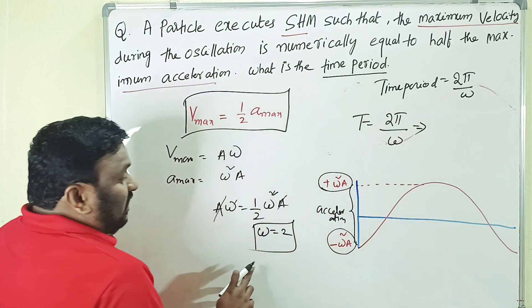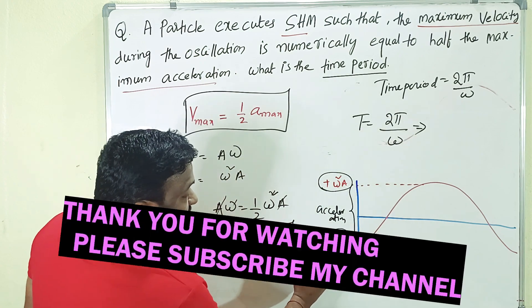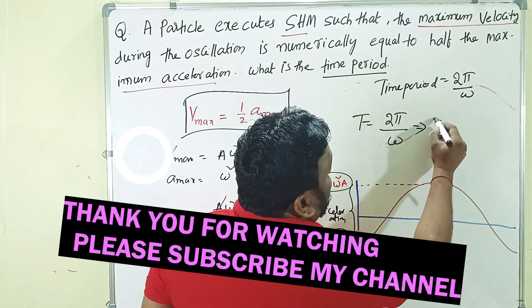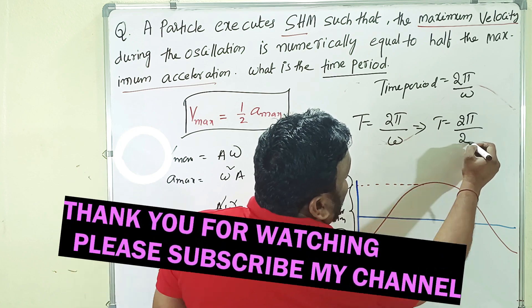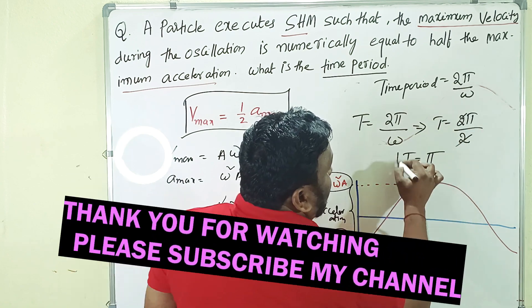So here, already what we got value? Omega value 2 radians per second. And that's why T is equals to what? 2π by omega is 2, 2 cancel. Then T is equals to what? π seconds.